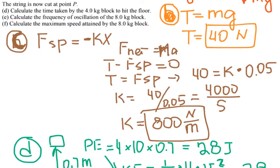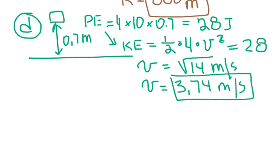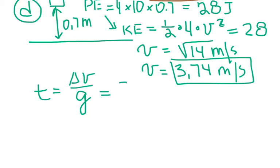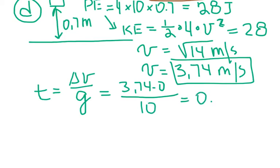They ask for the time to hit the floor. Using t = Δv / a, the final velocity is √14 ≈ 3.74 m/s, the initial velocity was zero before the string was cut, and acceleration is 10 m/s². This gives t = 0.374 seconds.